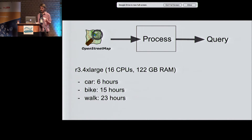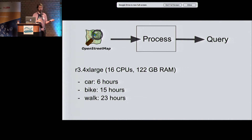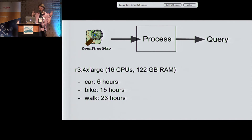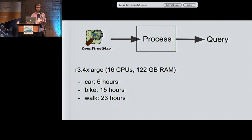We process the OSM data — the current planet is about 280 gigabytes uncompressed XML, or 30 gigabytes as a protobuf. We load it into a big instance: 16 CPUs, 122 gigabytes of RAM, running on Amazon Web Services. It takes around six hours to preprocess for the car profile, 15 hours for the bike profile, and 23 hours for the walking profile — proportional to the amount of routable data.